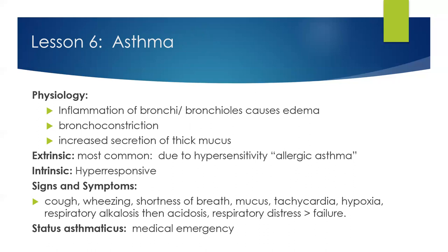Asthma — the physiology behind asthma is inflammation of the bronchi and bronchioles, which causes edema in the lungs, bronchoconstriction, and increased secretion of thick mucus. The pathological changes include increased secretion of thick mucus, inflammation of the mucosa with edema, and bronchoconstriction due to contraction of the smooth muscle. Extrinsic asthma is caused by an external exposure that leads to an asthma attack — the patient has a hypersensitivity to something, which triggers a reaction causing chemical mediators.